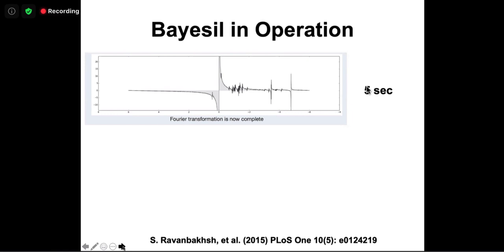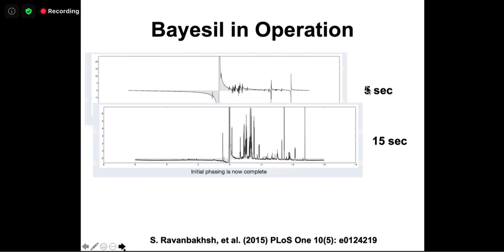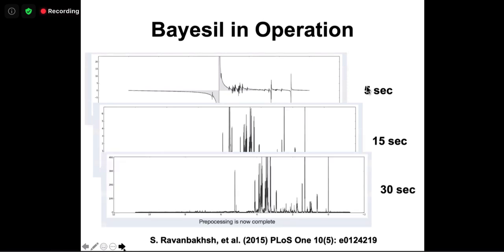In the first five seconds, BASIL takes the NMR spectrum and does a Fourier transform — the result looks pretty ugly with peaks pointing up and down. Next it phases the spectrum so all peaks point up, but the baseline isn't great and there's a giant water peak. Phasing takes about 15 seconds. Then it removes the water, does baseline correction, and figures out where the zero ppm DSS signal is — in about 30 seconds all automatic processing is done.